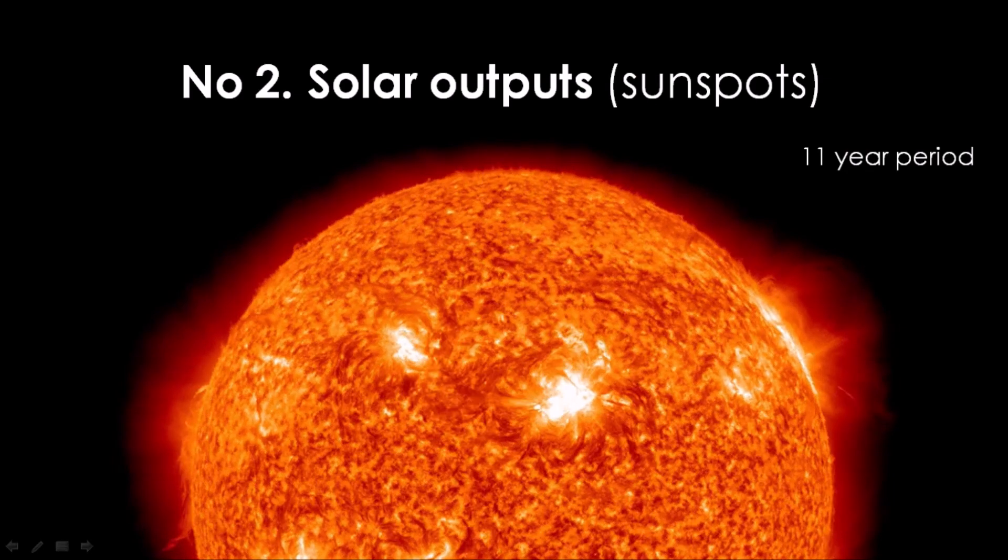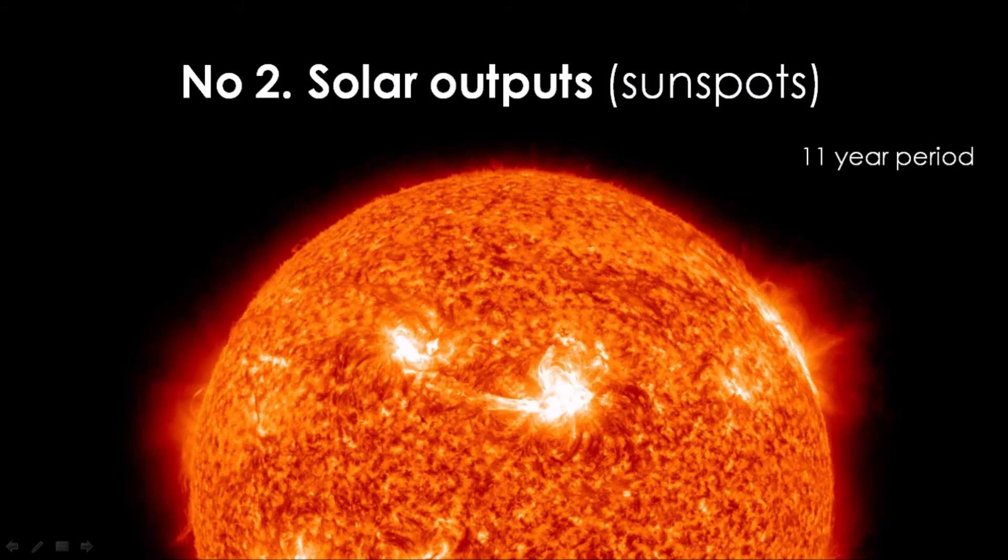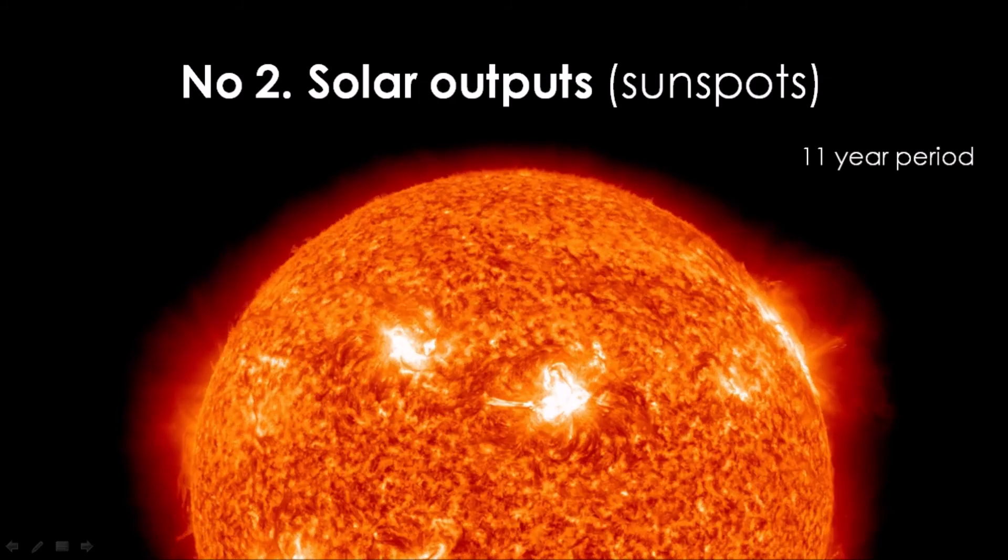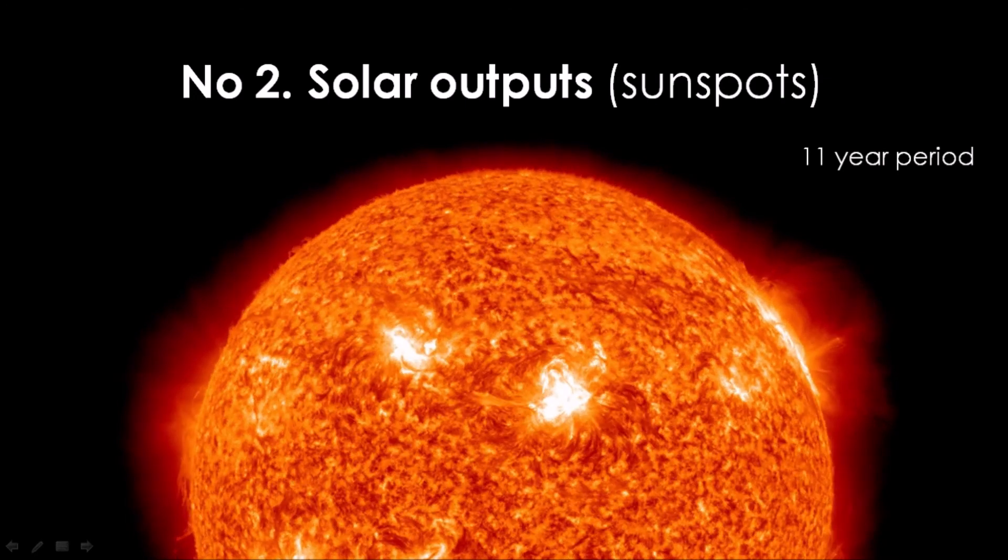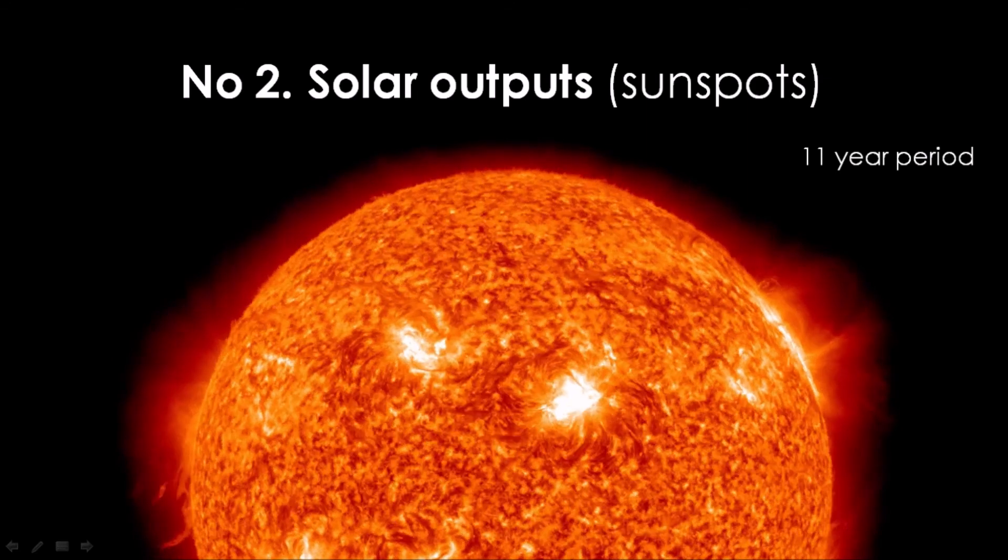The second natural cause of climate change is known as solar output, or sunspot activity. The output of the Sun is measured by observing these sunspots, these dark patches on the surface of the Sun, and they appear dark because they are cooler than other parts of the Sun's surface.